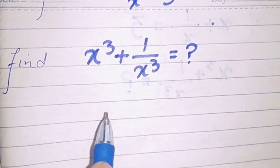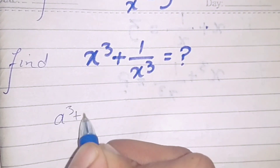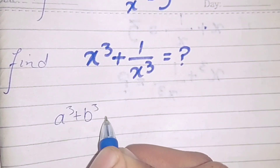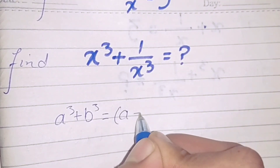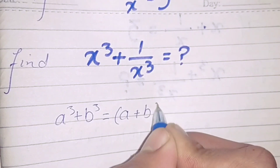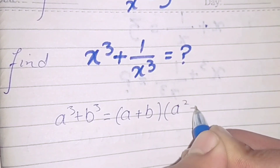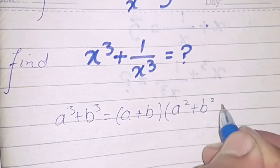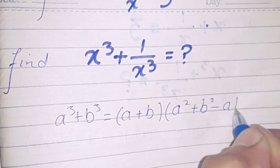Going to our solution. As we know that a cubed plus b cubed is equal to a plus b, into a squared plus b squared minus ab.